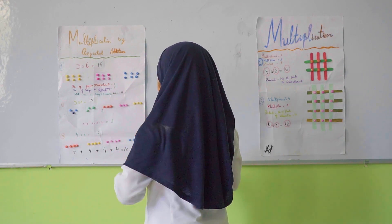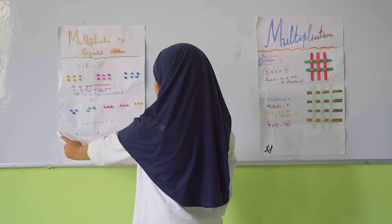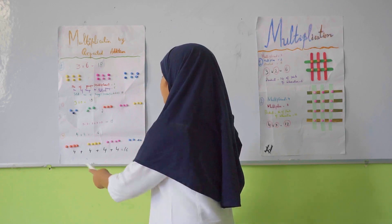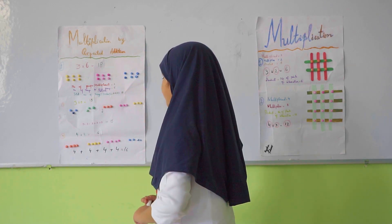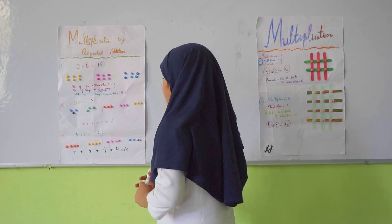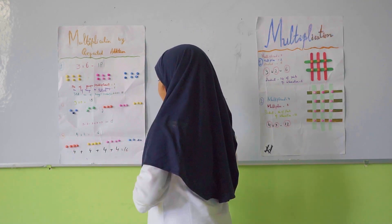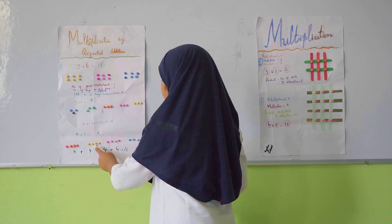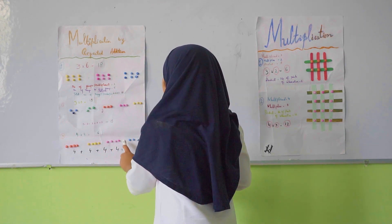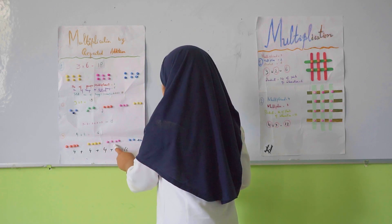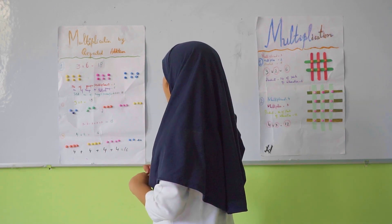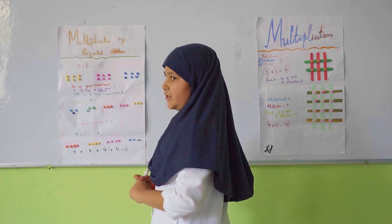And 9 plus 3 is 12, and 12 plus 3 is 15. Now our other question is 4 multiply by 4. So there are 4 groups and in each group there are 4 things. 4 plus 4 is 8, 8 plus 4 is 12, and 12 plus 4 is 16. So this was multiplication by repeated addition.